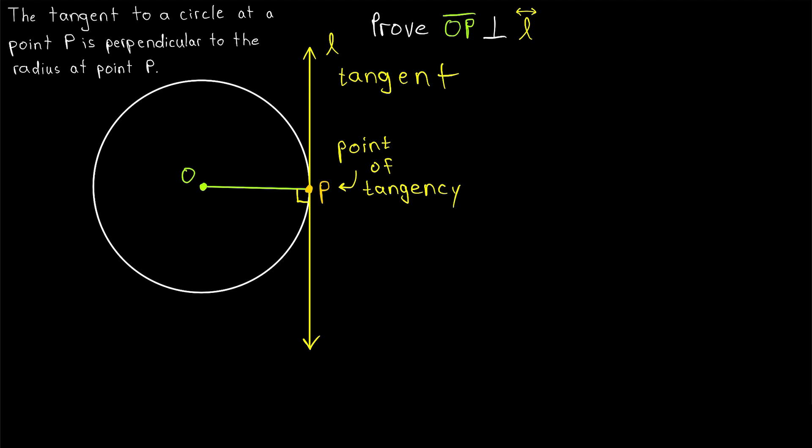So, we're proving that this line L is perpendicular to this radius of the circle OP, which is the radius that meets the tangent line. We're trying to prove that radius OP is perpendicular to tangent line L. This is a very useful result, so it's pretty important we know how to prove it. So, let's do it.